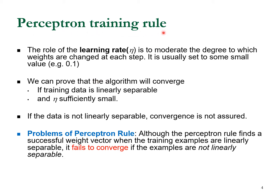If you use the perceptron training rule in a perceptron network, the algorithm will converge if the original training data is linearly separable — meaning the data can be separated by a linear line. If the training data is linearly separable and the learning rate is sufficiently small, the perceptron training rule is guaranteed to converge and find a successful weight vector.